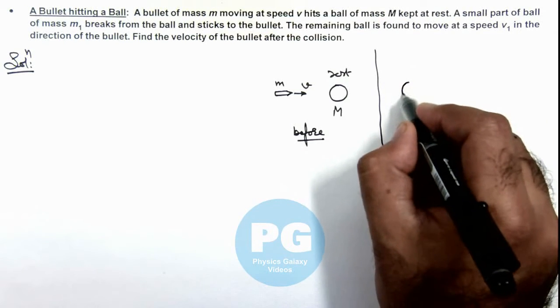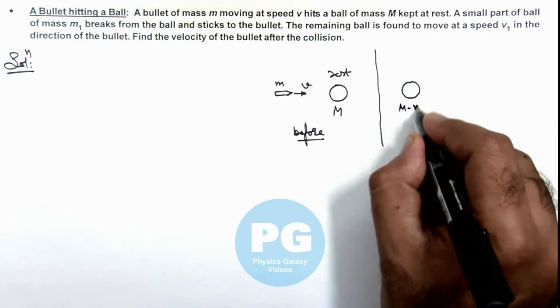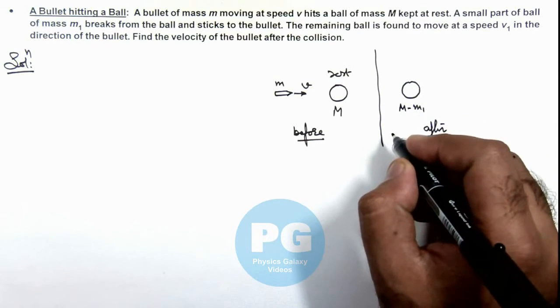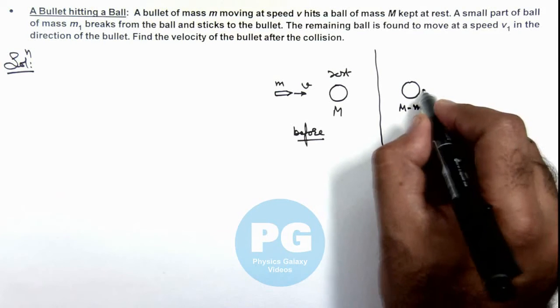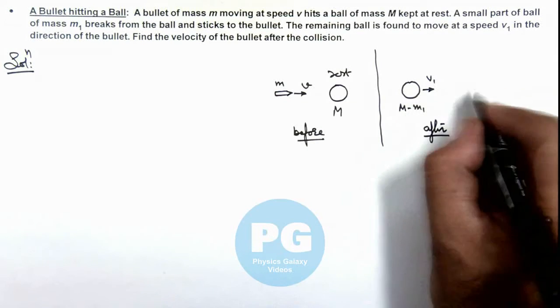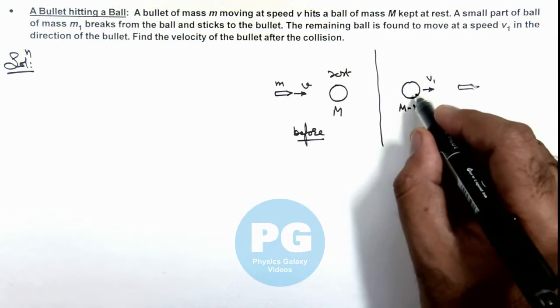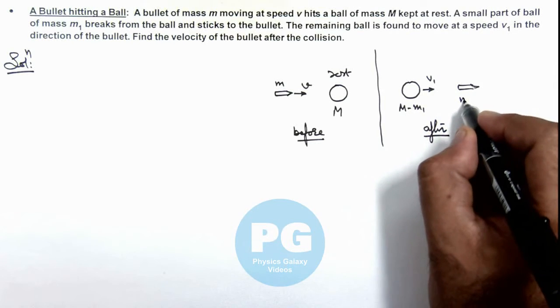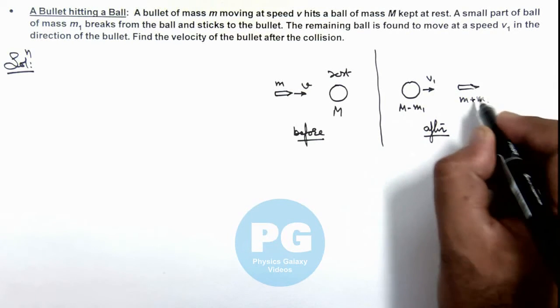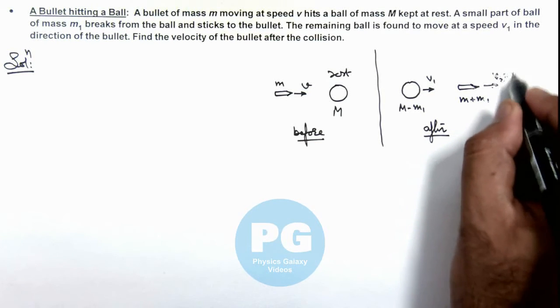After collision, the ball will be having a mass M-m1, and it is given that it is found to move at velocity v1. When the bullet comes out from the ball, this mass m1 which breaks from the ball sticks onto the bullet, so its mass is m+m1, and say it is moving with velocity v2. We are required to find this velocity.